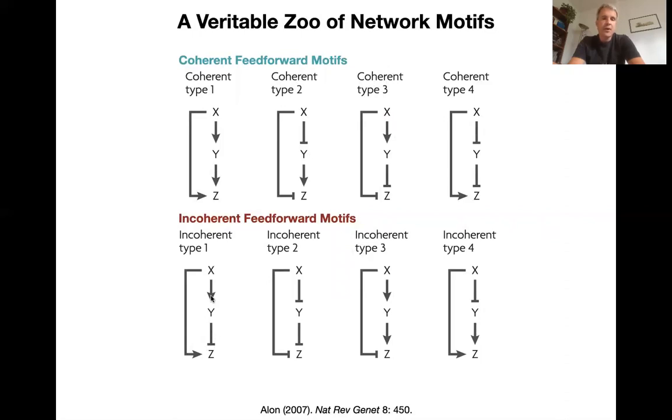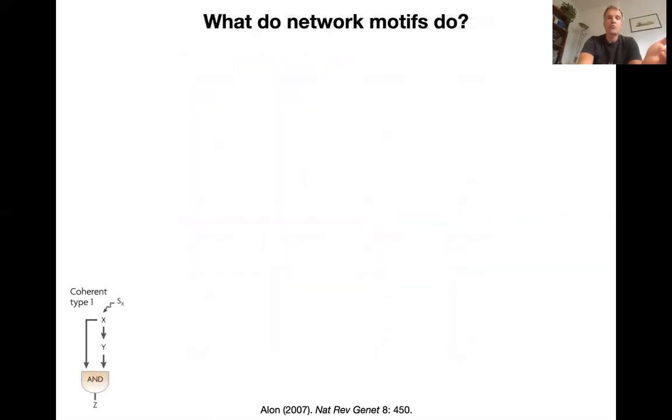So within this single motive of the feed forward motive, there are at least eight different types of motives. And it gets worse because, of course, where the two branches meet, you can have different functional forms. For example, here we assume that the two branches reunite through an AND function. So both the direct activation by X and the indirect activation by Y need to be present to activate C. What we can do now with such a simple motive is we can study what it does. We can model it.